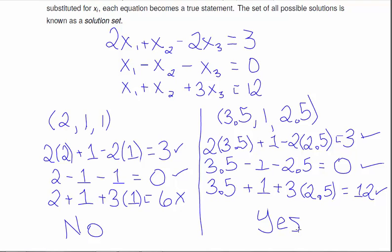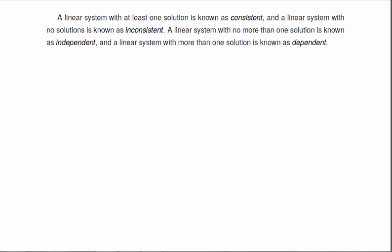Well, we don't know that, but this one is definitely a solution. A linear system with at least one solution is known as consistent, and a linear system with no solutions is known as inconsistent. A linear system with no more than one solution is known as independent, and a linear system with more than one solution is known as dependent.